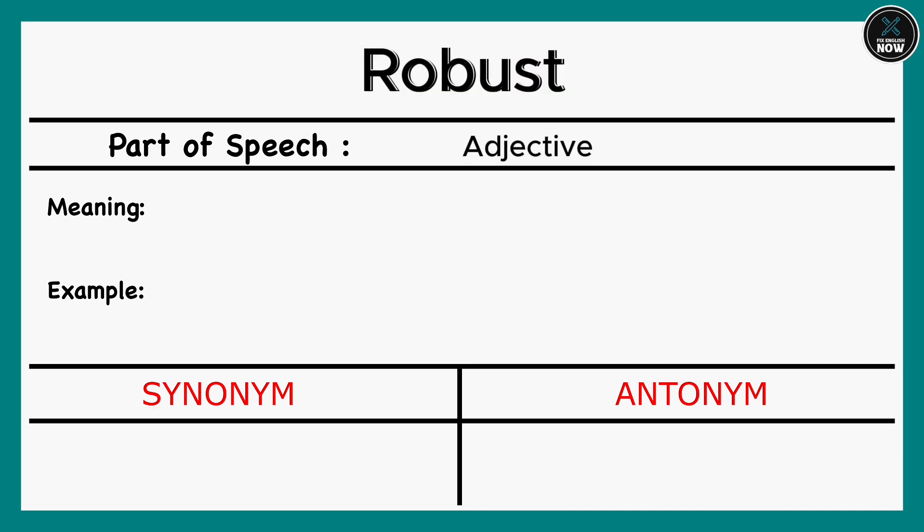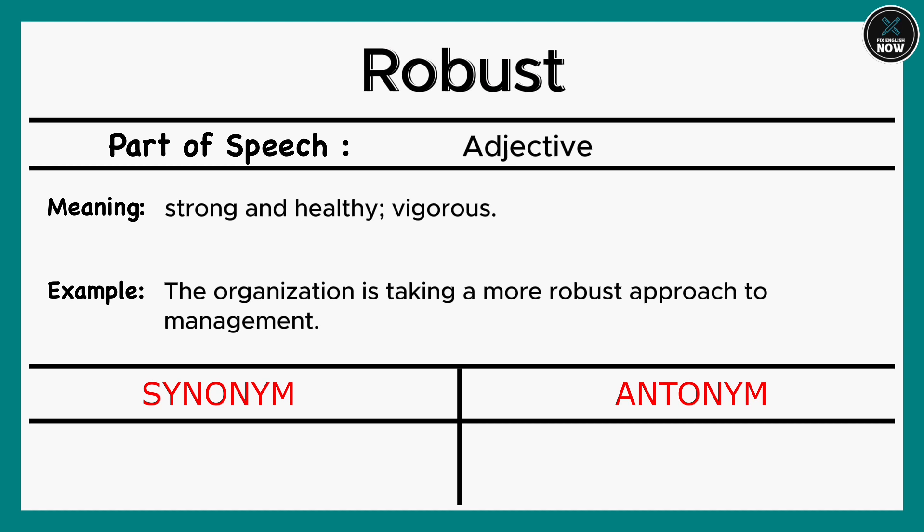Robust: Strong and healthy; vigorous. Example: The organization is taking a more robust approach to management. Synonyms: Powerful, Persistent. Antonyms: Weak, Feeble.